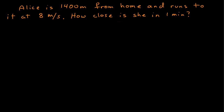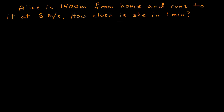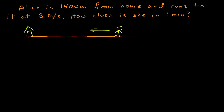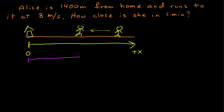So let's do an example. Alice is 1400 meters from home and runs to it at 8 meters per second. How close is she in one minute? Let's practice a problem-solving strategy starting with a picture. We have some home and Alice is 1400 meters away. She's going to be running towards home. We need a coordinate system with a zero and a positive direction. I'll put zero at home and make positive that direction, and give the coordinate the name x. So one minute later, Alice is closer, and I want to know how close she is.